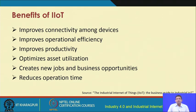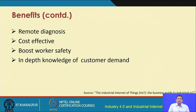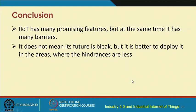The benefits of IIoT include improving connectivity among devices, improving operational efficiency, improving productivity, optimizing asset utilization, creating new jobs and business opportunities, reducing operation time, enabling remote diagnosis of machines, cost effectiveness, and boosting worker safety. IIoT technologies have found a large number of different applications, and there are many projects running worldwide to improve worker safety in industries through the adoption of these different IIoT technologies.